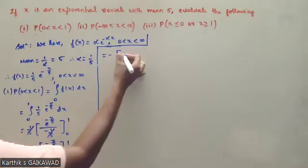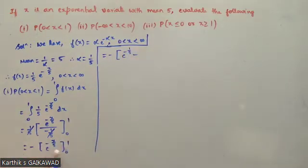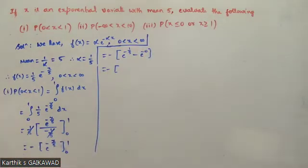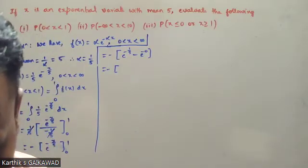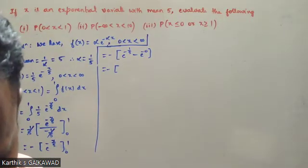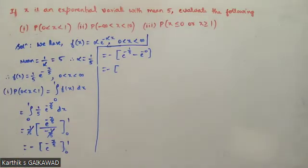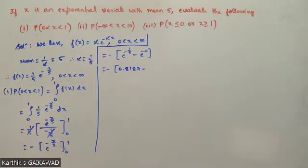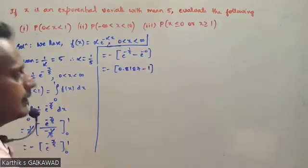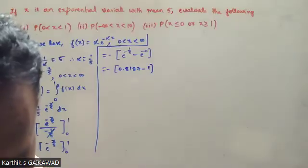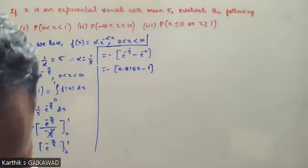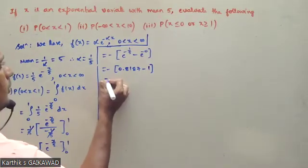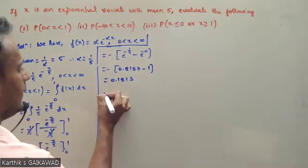Evaluating: minus e to the power minus x by 5 from 0 to 1 gives minus e to the power minus 1 by 5 minus (minus e to the power 0), which equals 0.8187 minus 1. The answer is 0.1813.